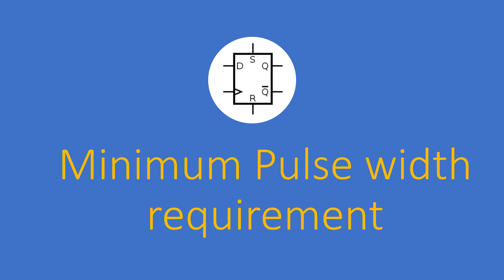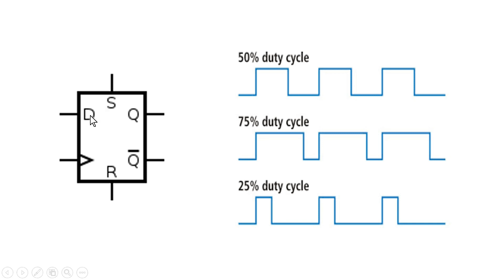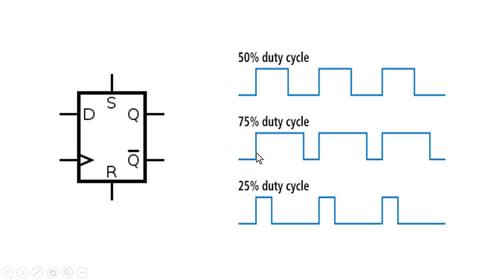We define a flip-flop such that D is passed to Q at the positive or negative clock edge, and in static timing analysis we ensure setup and hold requirements are met. However, we rarely talk about the duty cycle of the clock, and minimum pulse width requirement is directly associated with duty cycle. For example, a 50% duty cycle means logic high remains for 50% of the total time period; 75% duty cycle means logic high remains for 75%, and 25% duty cycle means logic high remains for 25% of the time period.